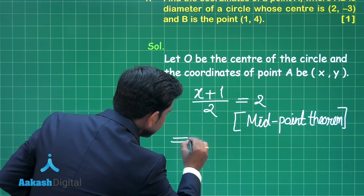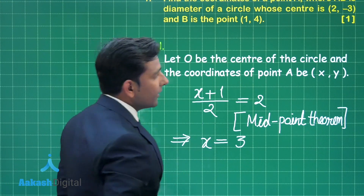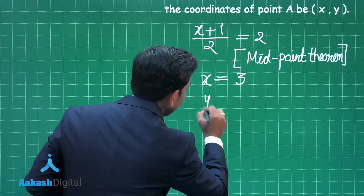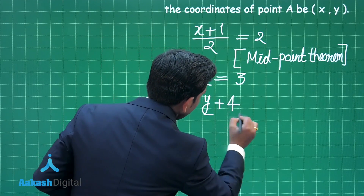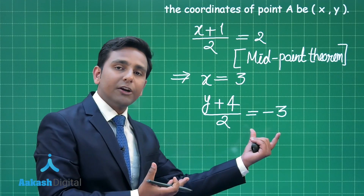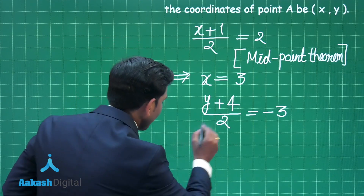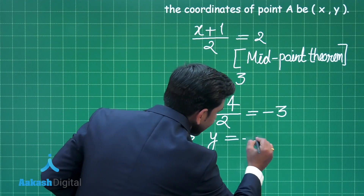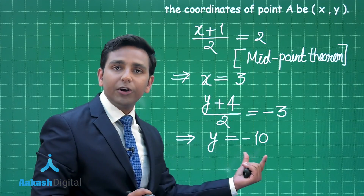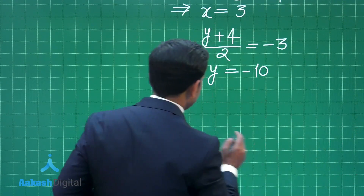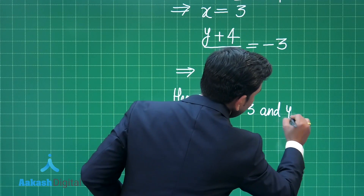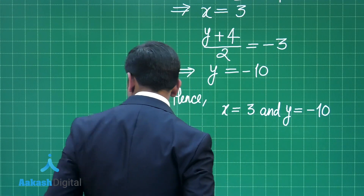Solving that equation gives x = 3. Now finding y using the same midpoint theorem concept: (y + 4) / 2 = -3, meaning y₁ + y₂ divided by 2 equals the y-coordinate of the midpoint. Solving further gives y = -10. So the coordinates of point A are (3, -10). Hence x = 3 and y = -10 is the required answer.